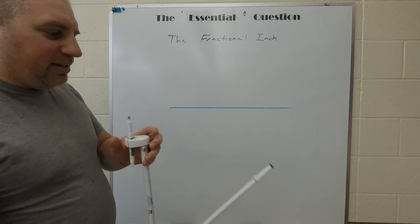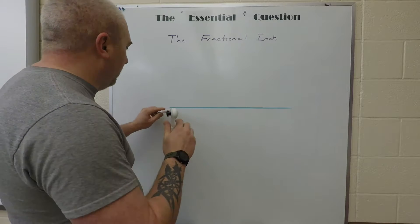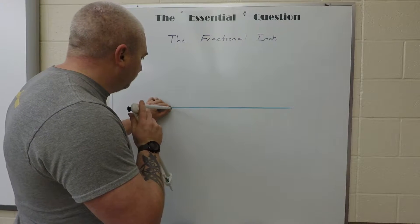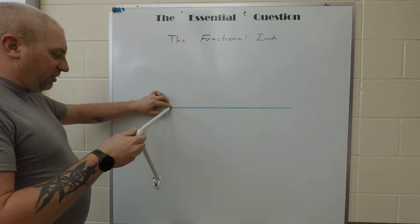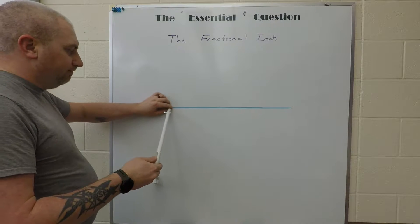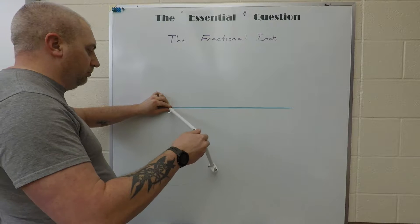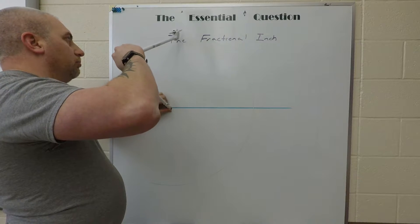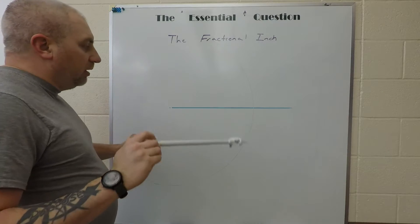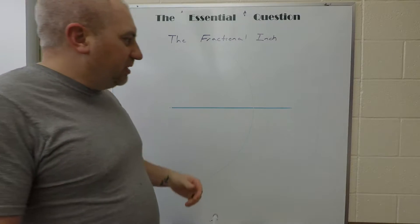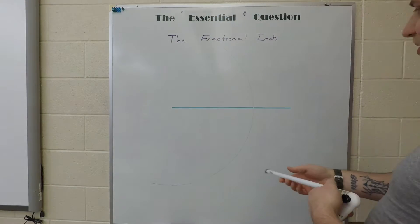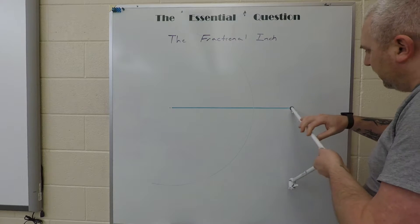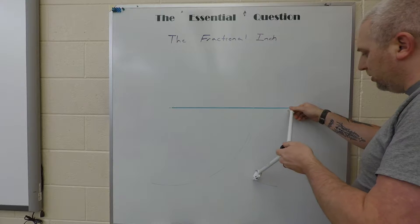In order to divide this in half, we're going to take our compass and set the distance arbitrarily to anything past the halfway point. You can eyeball it, make sure it's more than halfway, and adjust it. Then we're going to take the point of our compass, place it on one endpoint of our line, and swing an arc. Then we're going to jump over to the other side and do the exact same thing. Place the endpoint of the compass on the line and swing an arc.